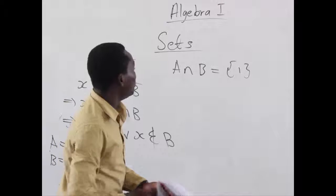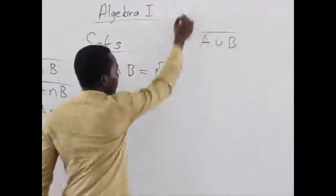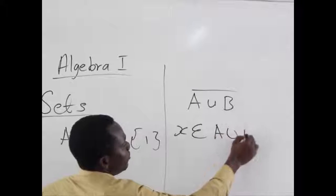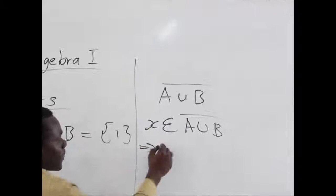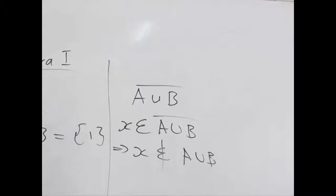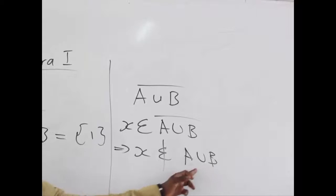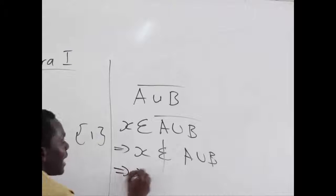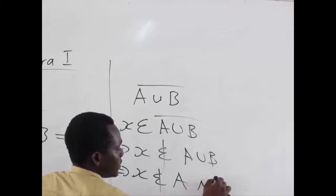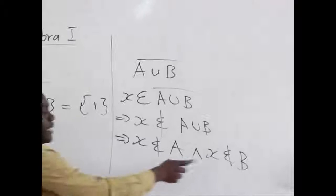Now, let's talk about A union B complement. Assuming X is an element in A union B complement, it simply means that X does not belong to A union B. And what meaning can we make out of X that does not belong to A union B? It simply means X does not belong to neither A nor B. So X does not belong to A, and at the same time, it doesn't belong to B.